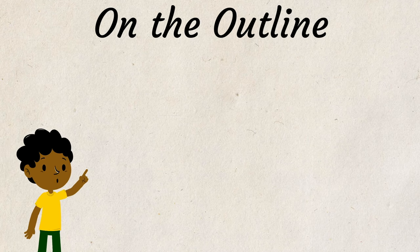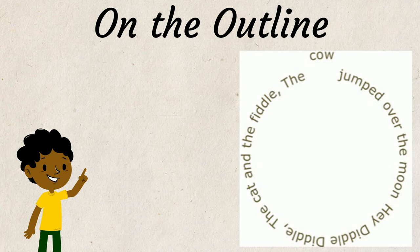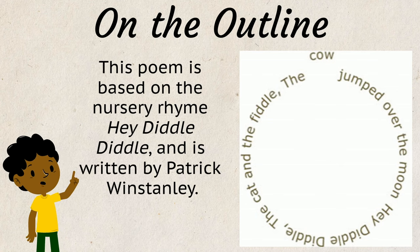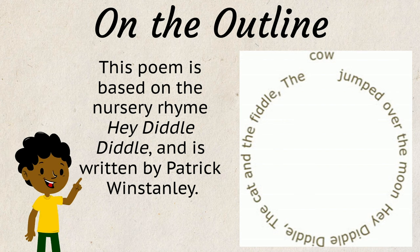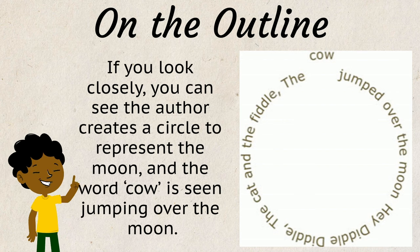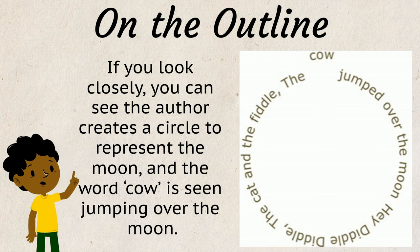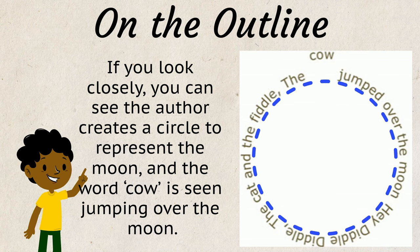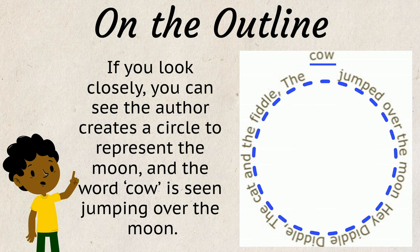Here is an example of a poem written on the outline of a subject. This poem is based on the nursery rhyme Hey Diddle Diddle, and is written by Patrick Winstanley. If you look closely, you can see the author creates a circle to represent the moon, and the word cow is seen jumping over the moon. Pretty cool, huh?